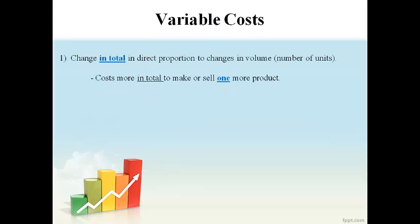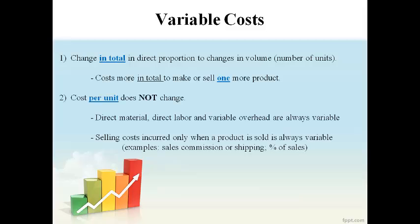Total variable costs change when volume changes. Making more products increases total variable cost. Making less products reduces total variable cost. The cost per unit does not change. Direct material and direct labor are always variable costs. Each time a unit of product is made, more direct materials and more direct labor is used. Variable costs are incurred when a unit of product is made or sold.